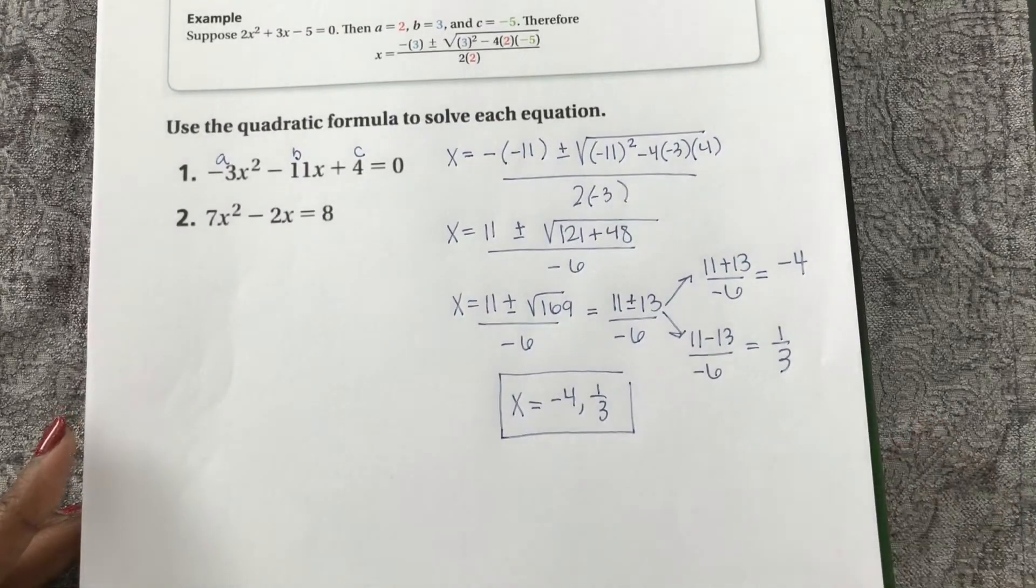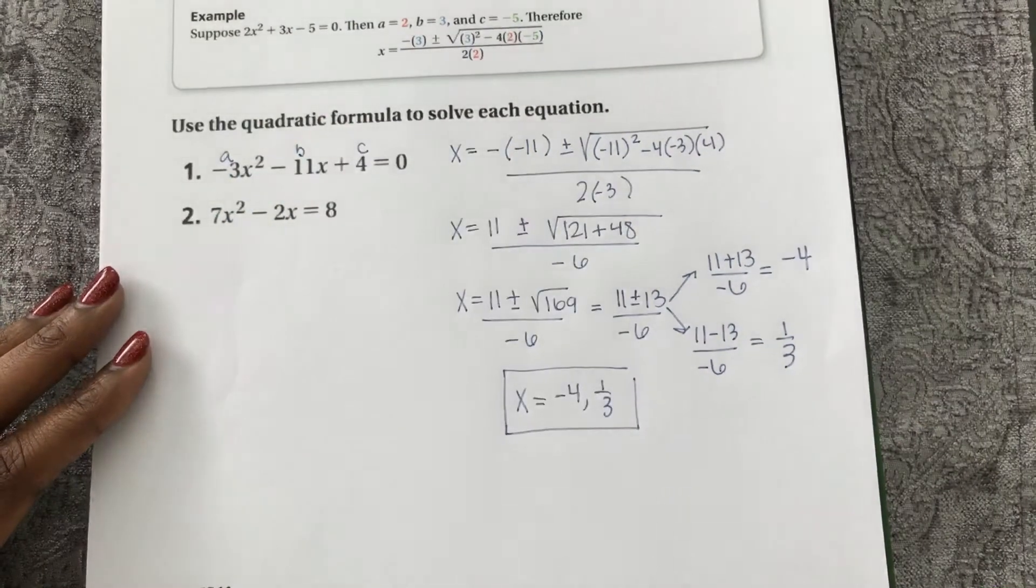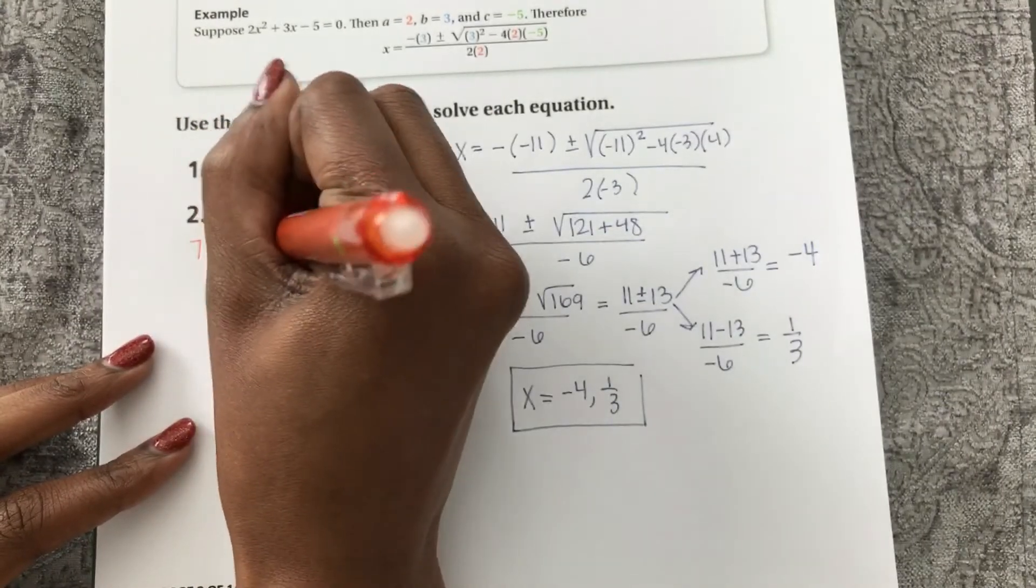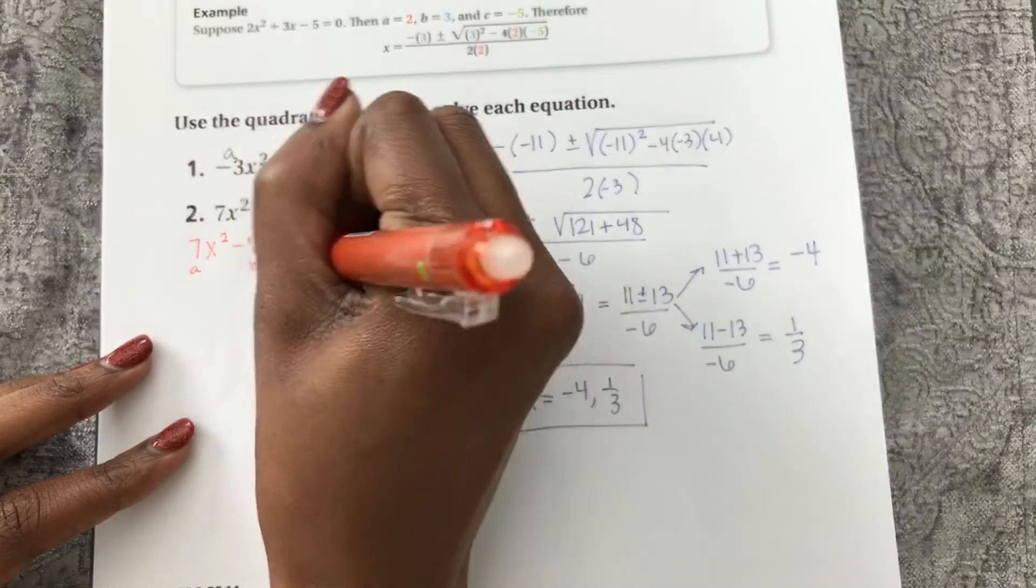Here in number 2, now it's a little different, one extra step. First, we must get our quadratic equal to zero. 7x squared minus 2x minus 8 equals zero. So now we have a, b, and c.